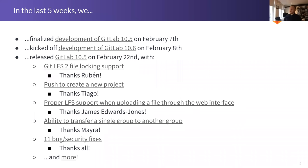In the last five weeks, we finalized development of GitLab 10.5 on the 7th and started development of GitLab 10.6 on the 8th. I'd like to recap what the platform backend team contributed to 10.5. First, GitLFS 2 file locking support — GitLFS 2 added file locking where you can lock access to a specific file on the command line. GitLab already supported file locking in the web interface, and now GitLFS 2 file locking interacts with it as expected: lock a file on the command line and it's also locked in the interface, and vice versa. Thanks Ruben for working on that.